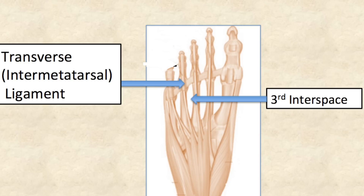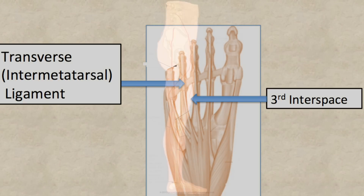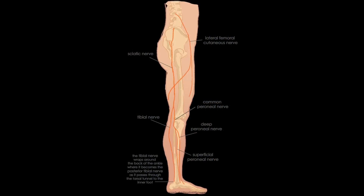Once the nerve is entrapped or damaged, it will not produce the normal nerve impulses needed for the sciatic nerve to work properly. Because of this, the nerve will instead generate abnormal, irregular, and pathologic nerve impulses. These atypical impulses then travel back up the sciatic nerve and along its numerous branches, causing pain all along the way.